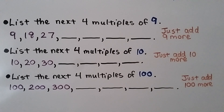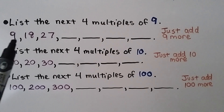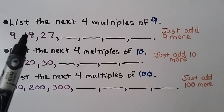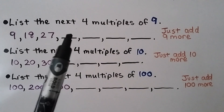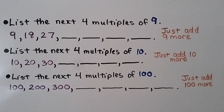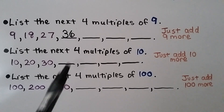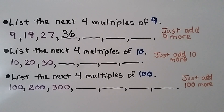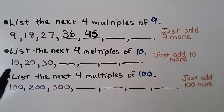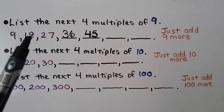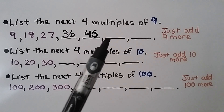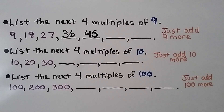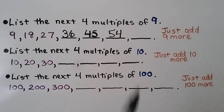We need to make a list of the next 4 multiples of 9. These are the products of the 9 facts. We have 9, 18, 27. To find the next number, we just add 9 more: that would be 4 times 9, which is 36, and 9 more would be 45. We can think of it as multiplying 9 times 1, 9 times 2, 9 times 3, 9 times 4, 9 times 5, 9 times 6 is 54, and 9 times 7 would be 63.